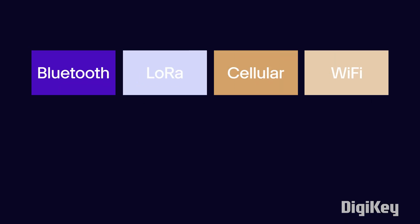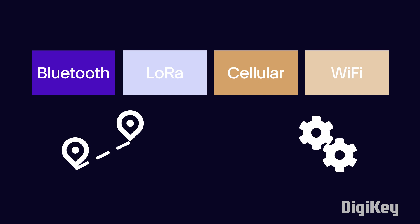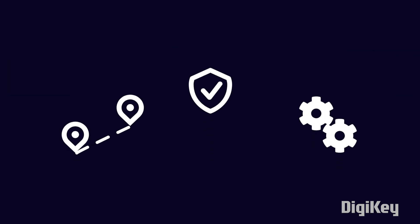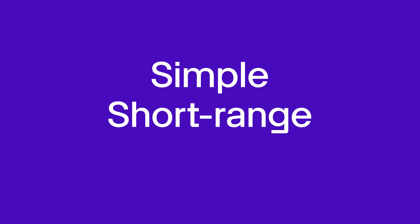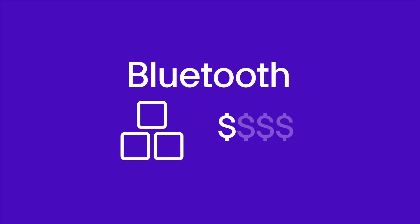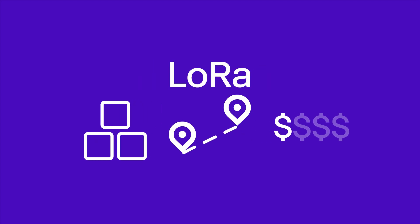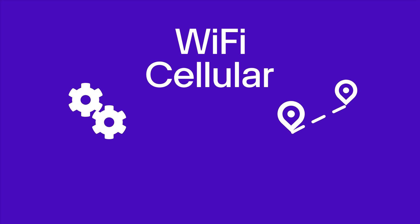So which device is the right choice? The main criteria are range, simplicity of implementation, and security. You should also take into consideration the availability of each technology. For simple, short-range projects, Bluetooth communication devices are very abundant and inexpensive. For greater range, LoRa is also inexpensive to build into a project. This leaves Wi-Fi and cellular as the most complex, longest range options that may carry additional costs but allow access from virtually anywhere.